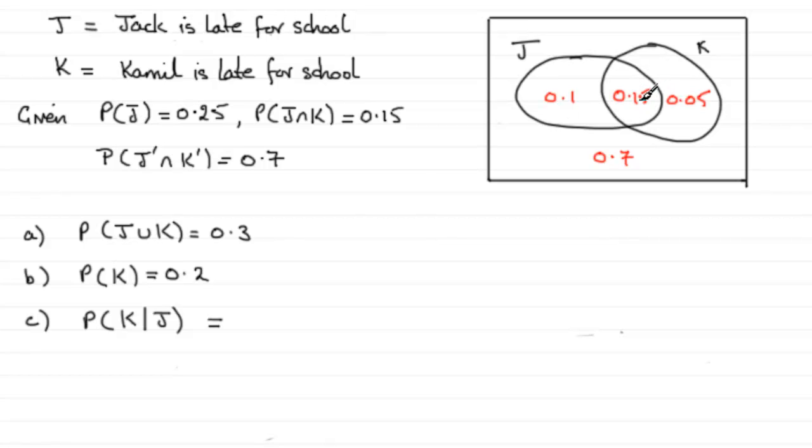Within this, what's the probability that Camel is late? So it's going to be 0.15 compared with 0.25. Camel is late given that Jack is late. So you've got 0.15 compared with the 0.25 here.